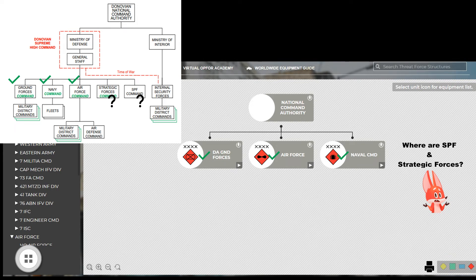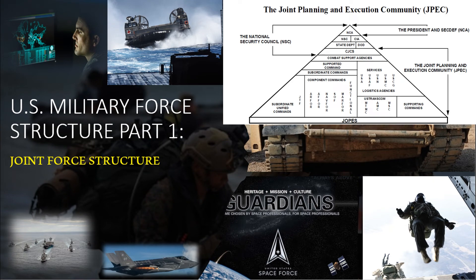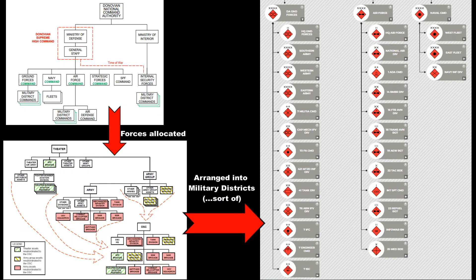ORBATs are typically built to communicate one of two force structures: administrative force structures that communicate oversight of trained man-equip efforts, and operational force structures that communicate how forces are organized to handle specific operational problems. Within Date, the Dynovian ORBAT is built in the operational force structure construct, meaning that most of the strategic force's traditional combat power capability is tasked to the Dynovian military districts, which have in turn tasked them to the Army, Navy, or Air Force contingent of that military district.